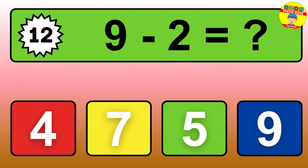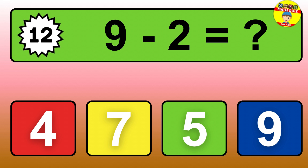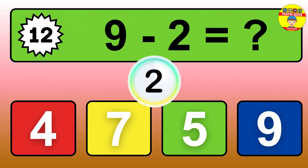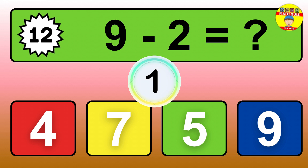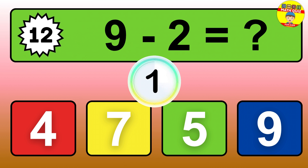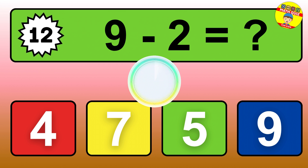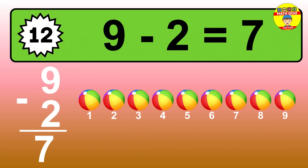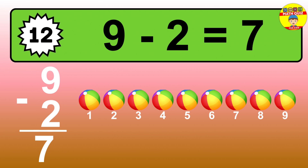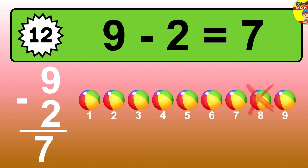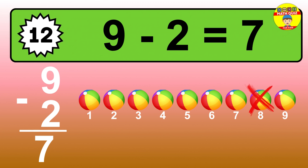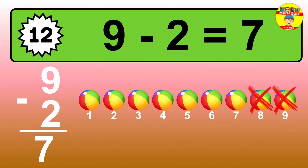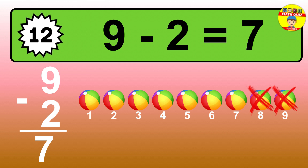Question twelve: nine minus two equals what? So the answer is, nine minus two is seven. Let's count it. One, two, three, four, five, six, seven.